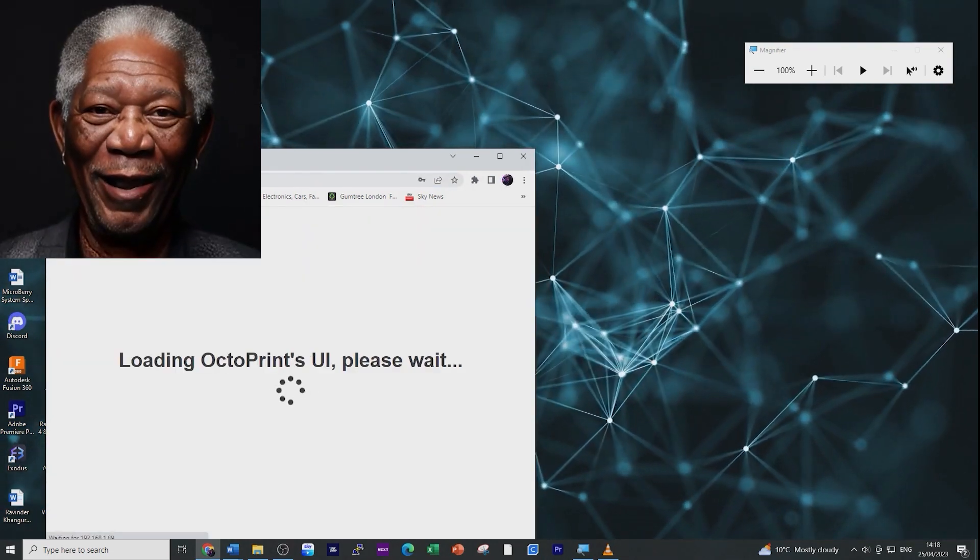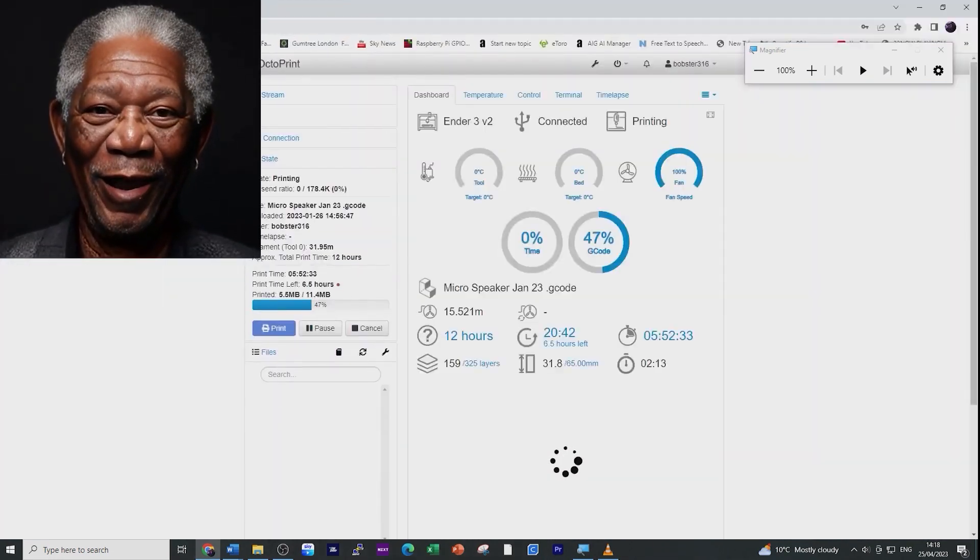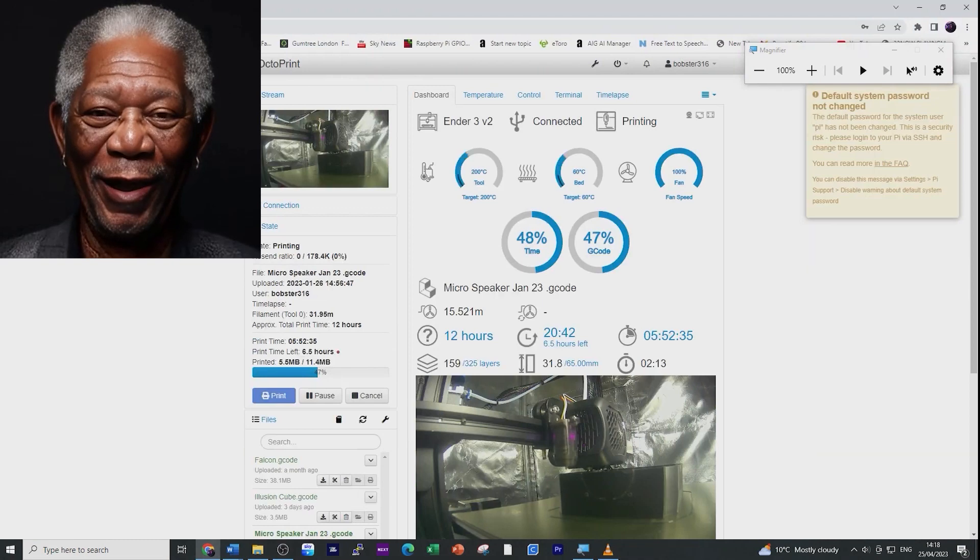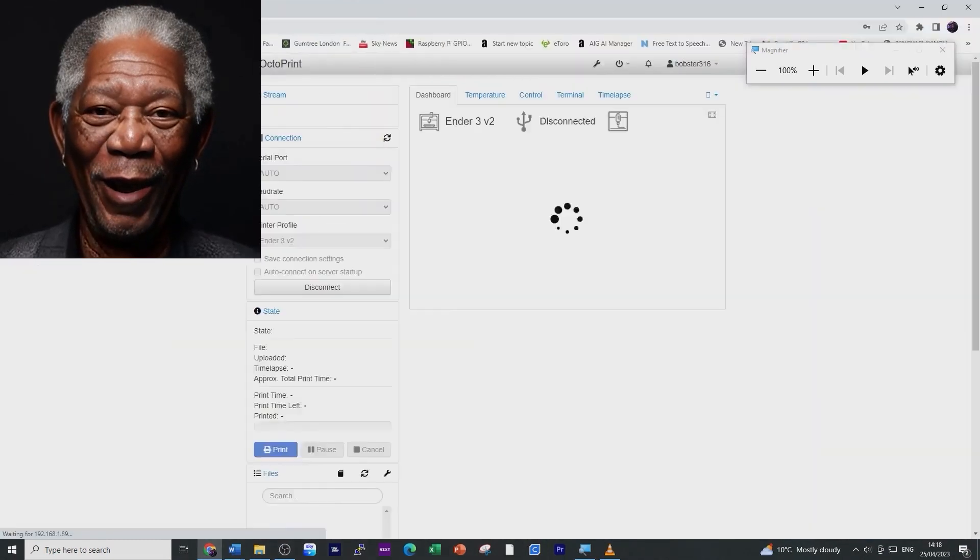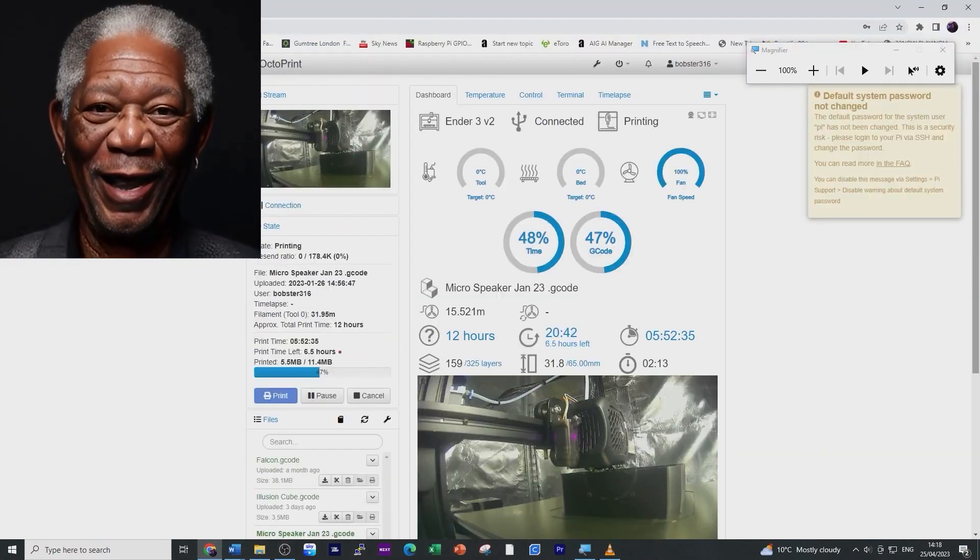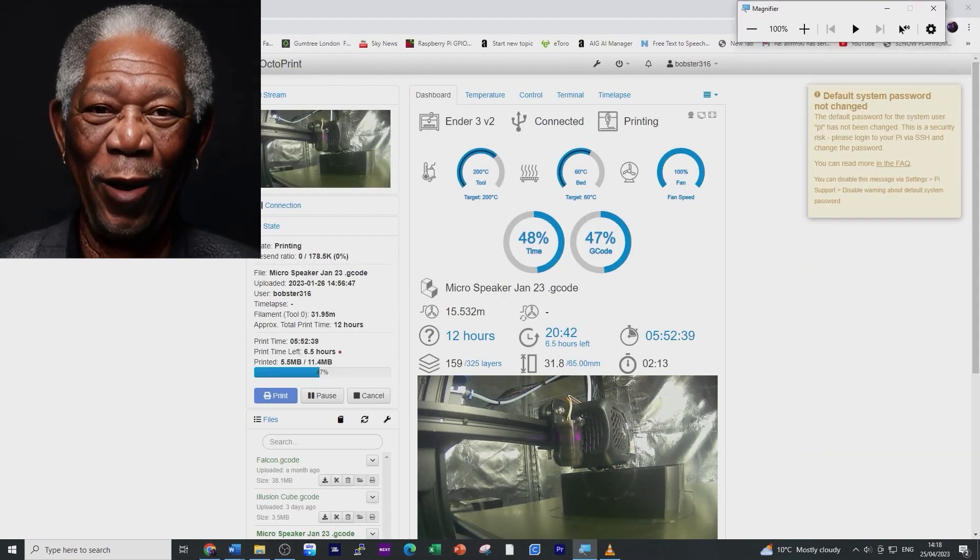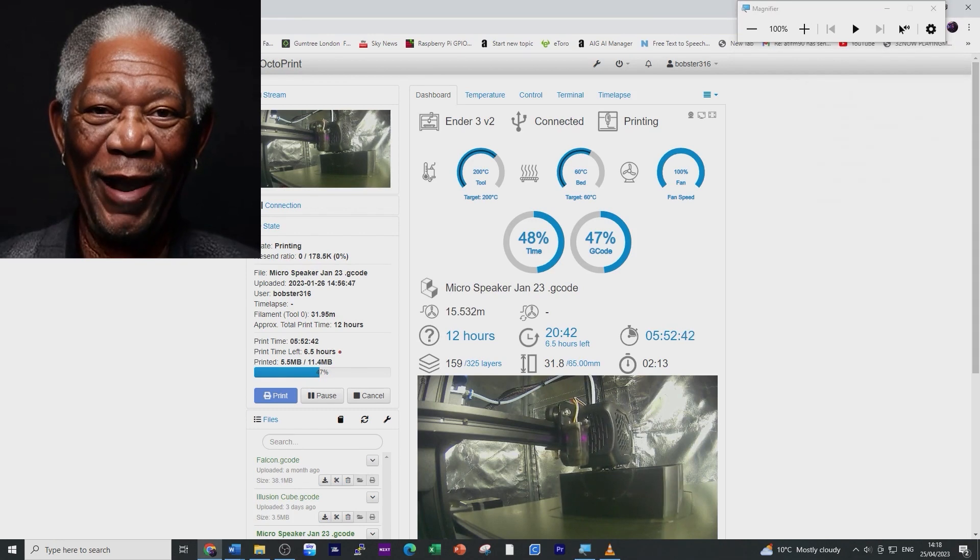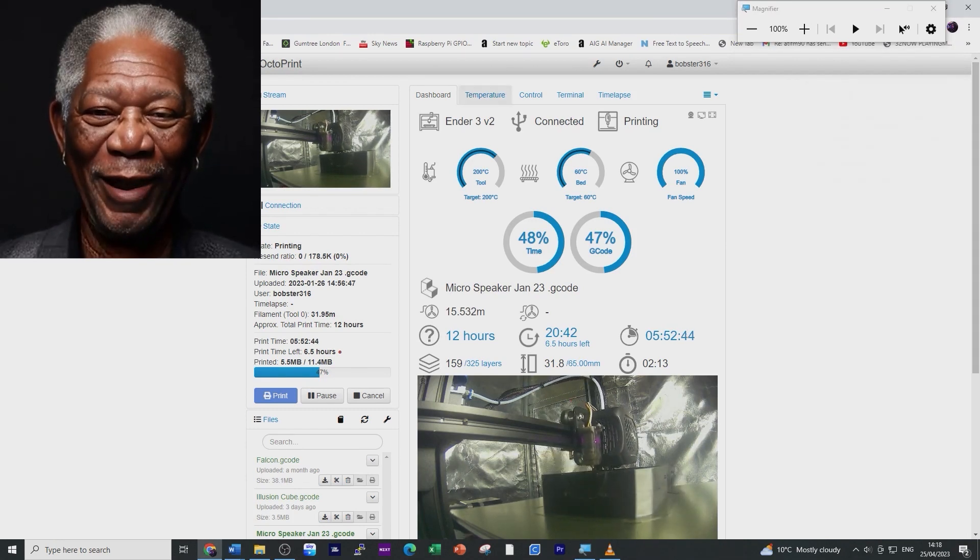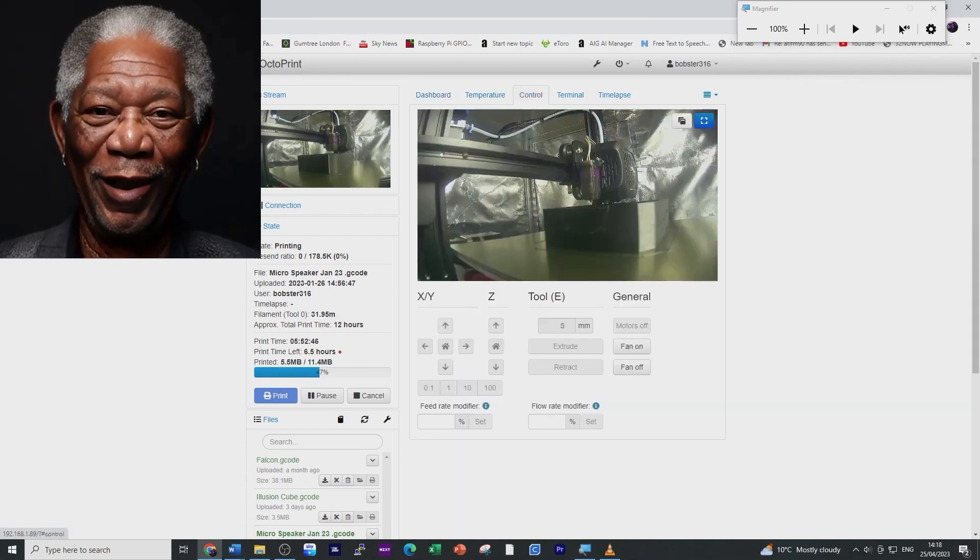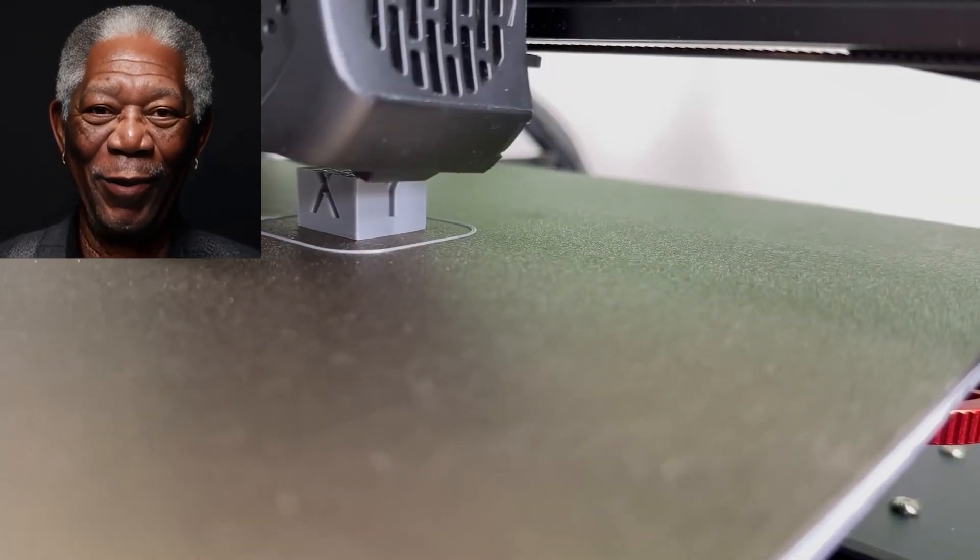The Wyze Cam V2 offers high-definition video streaming, motion detection, and two-way audio communication. You can check in on your prints in real time, receive alerts if anything goes wrong, and communicate with the camera's built-in microphone and speaker. With the Wyze Cam V2, you'll have peace of mind and be in full control of your 3D printing endeavor.